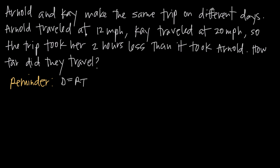Arnold traveled at 12 miles an hour and Kay traveled at 20 miles an hour, so the trip took her two hours less than it took Arnold, which makes sense because if Kay traveled at a faster speed then the trip is going to take her less time. How far did they travel? What was the distance that they traveled?